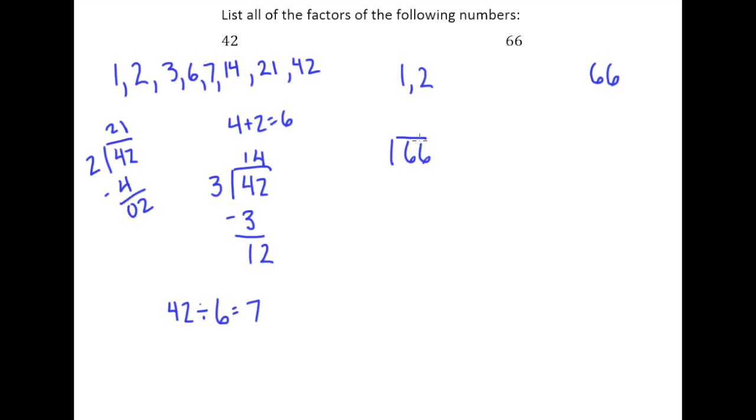So I'll do my long division down here to see what goes with it. 2 goes into 6 three times. Drop my 6 down, 2 goes into 6 three times. And so I know that the number that goes with 2 is 33.